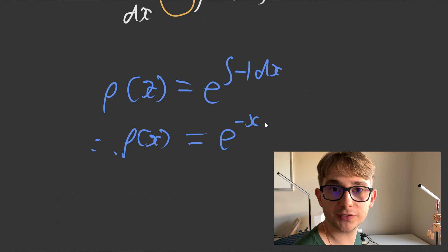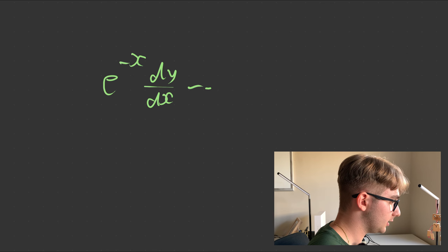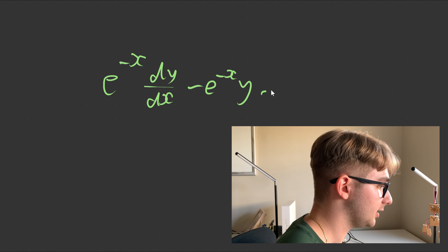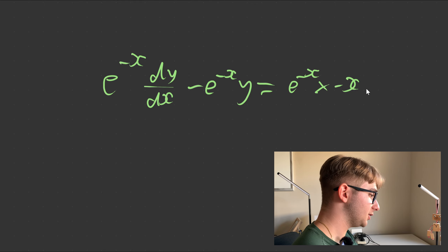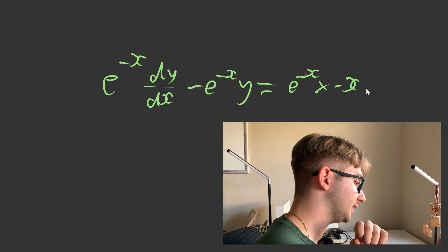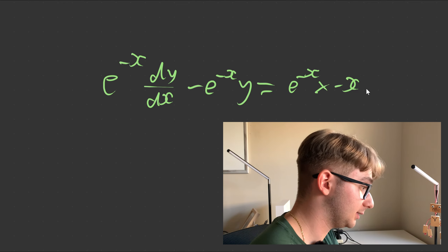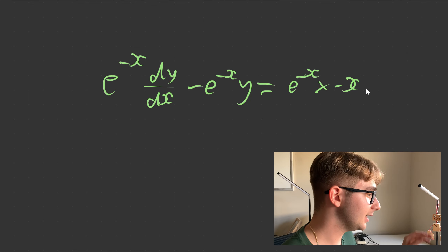Now we're going to use this p(x) and multiply both sides by it. So we're going to get e to the minus x times dy/dx, minus e to the power of minus x times y, equals e to the minus x times e to the x. So e to the minus x is our function — we differentiate the second function to get dy/dx, then add the derivative of the first function, which is negative e to the minus x, multiplied by y. That explains why there's no plus sign there.